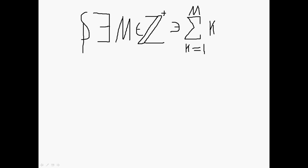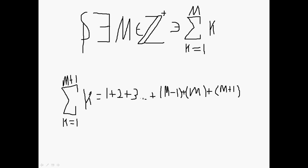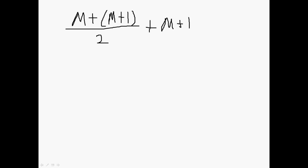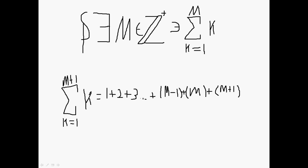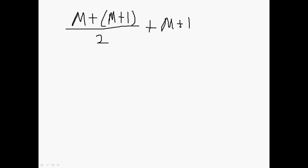Suppose there exists M, which is an element of all positive integers, such that the sum as K goes from 1 to M of K — that means as K goes from 1 to M+1, you have 1 + 2 + 3 all the way up to M + (M+1). We've shown that the left-hand side all the way up to M+1 would be our formula. I accidentally wrote a plus right there — just disregard that, it should be a times.